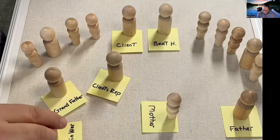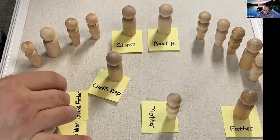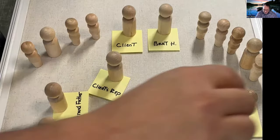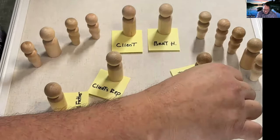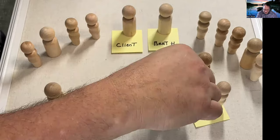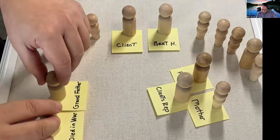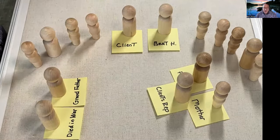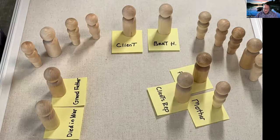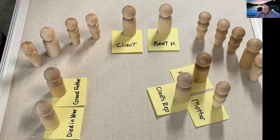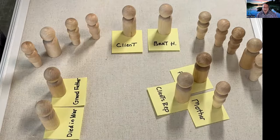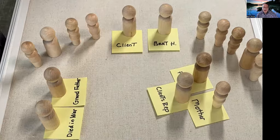So now maybe Bert Hellinger takes the men at war and the grandfather and they're together. And then perhaps he takes the mother and father together and the client stands with his parents. And now, here's an arrangement where everybody might really feel relaxed. The mother and the client's rep, her son, can see the grandfather and the men who died in war and they have a place. And there's no reason for the client to continue to be entangled with his grandfather. His grandfather doesn't have to leave. He can stay.